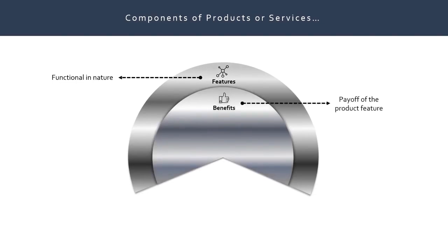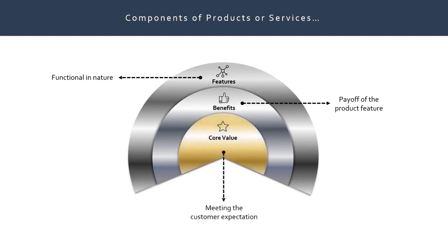The third is core value. Core value is the one which actually meets the customer expectations. This is again further embedded within the feature and benefits and it has to be unraveled to the customer.